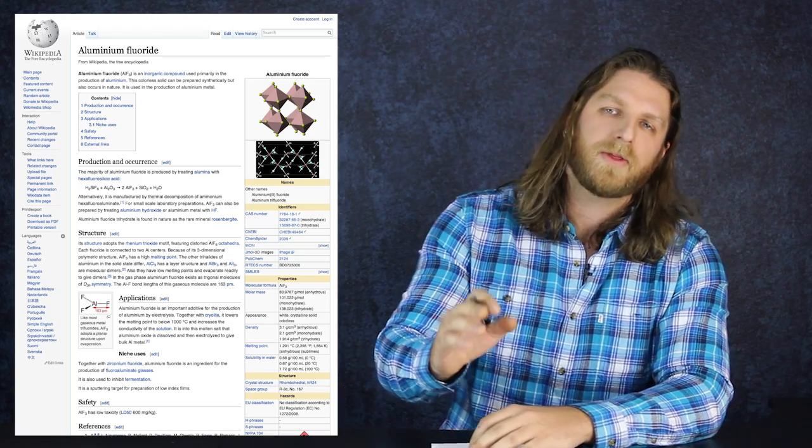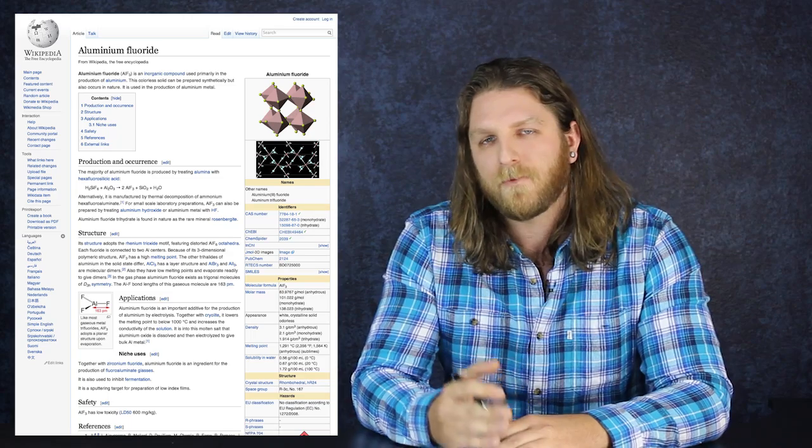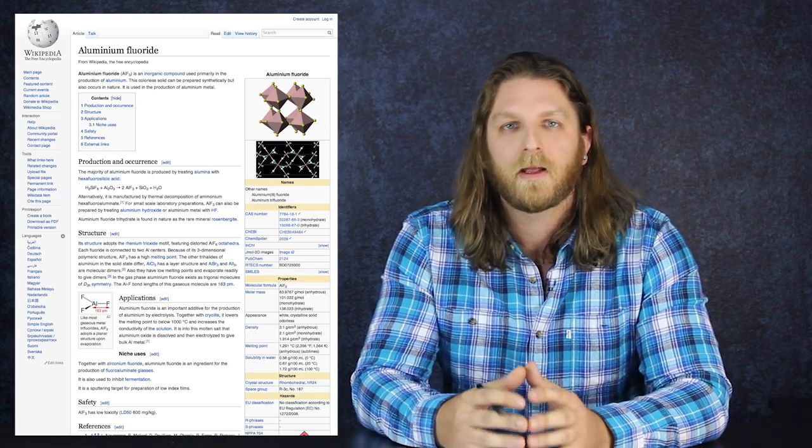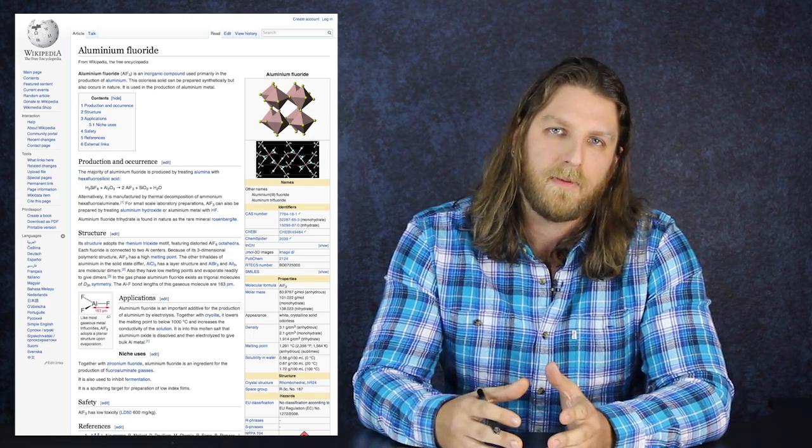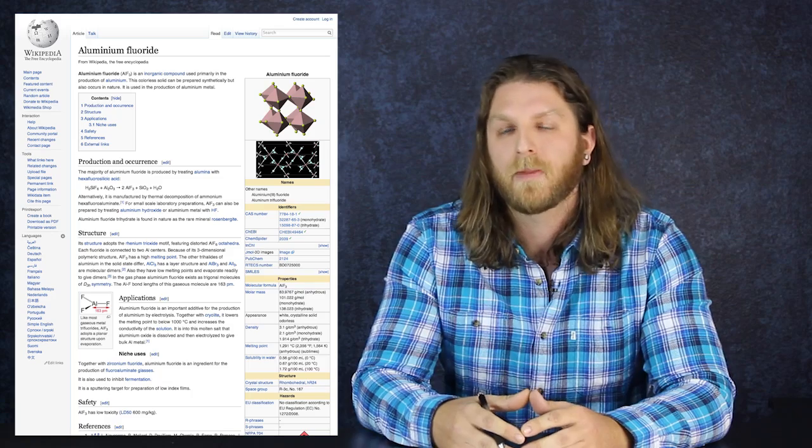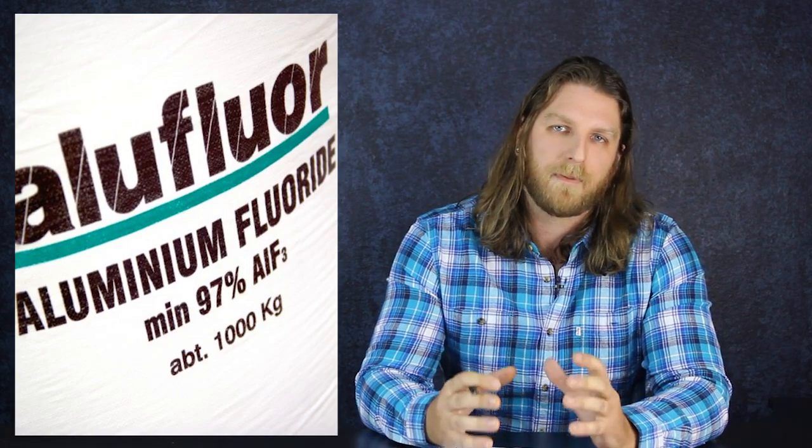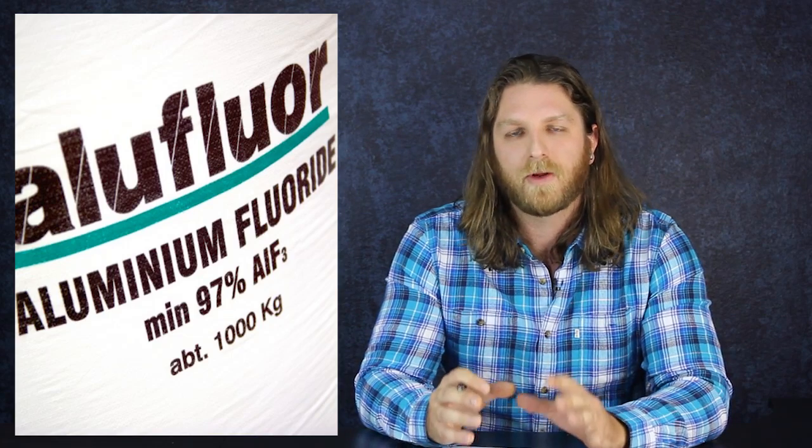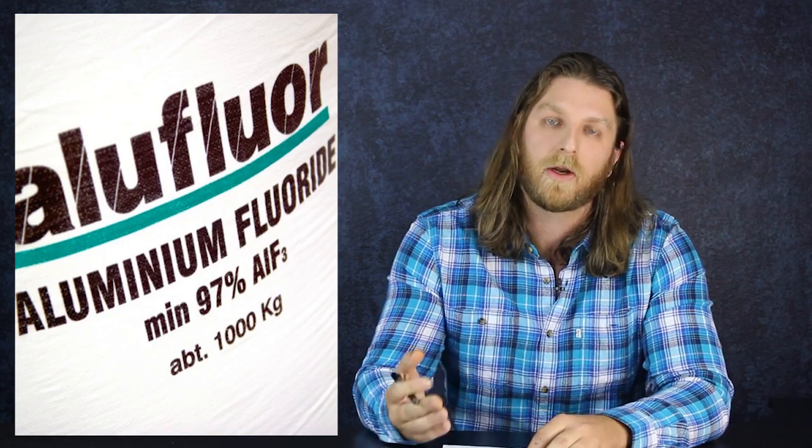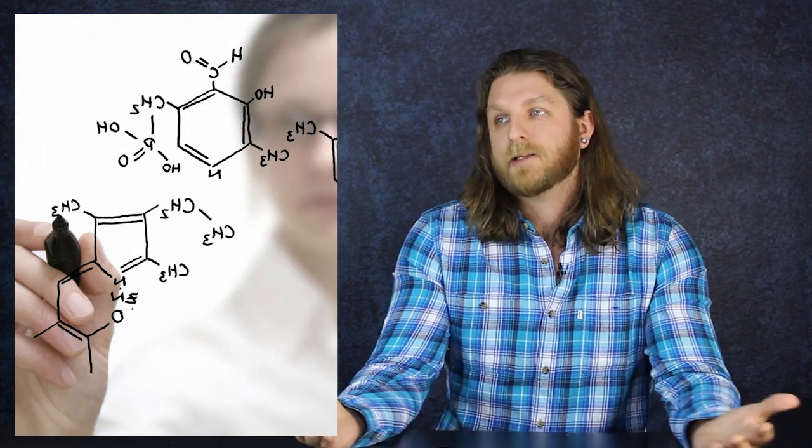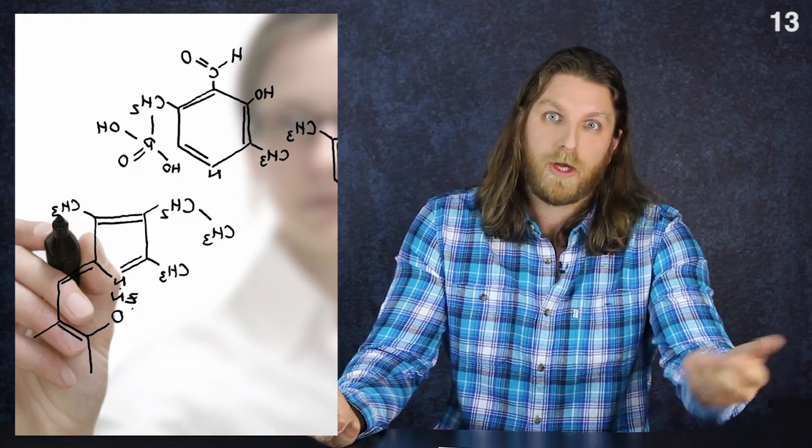Okay, starting with the aluminum claims. Aluminum fluoride is a colorless solid that can be prepared synthetically, but also occurs naturally, that is used in the production of aluminum metal. It is not a toxic byproduct, but an important additive for the creation of the aluminum used in commercial products. That's how chemistry works. Combine compounds and a variety of methods to create cool shit.